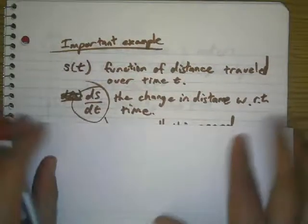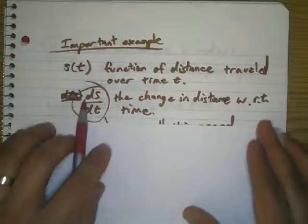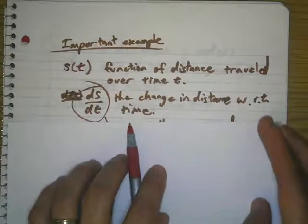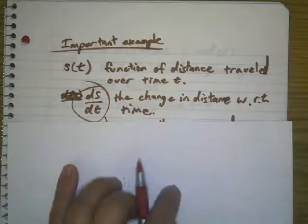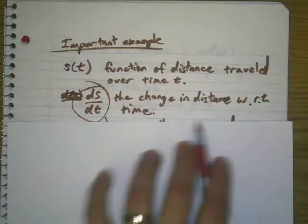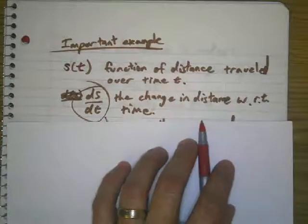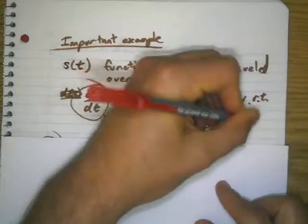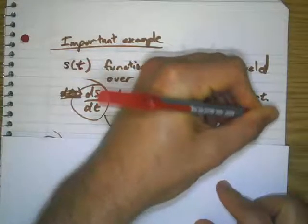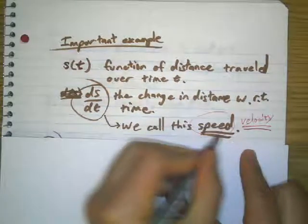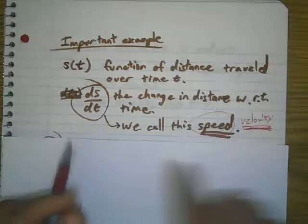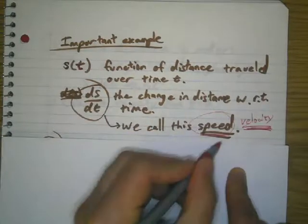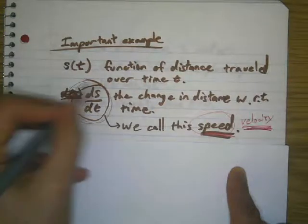So if I wanted to take the derivative of this function, I would write ds/dt, the change of distance with respect to time. Now, anybody who's ever been in a car would know that some people have talked about this thing called speed or velocity. So if you're talking about the speed or the velocity, you're talking about the change of distance with respect to time. So anybody who's ever been in a car might be interested in finding the derivative of a function for distance.